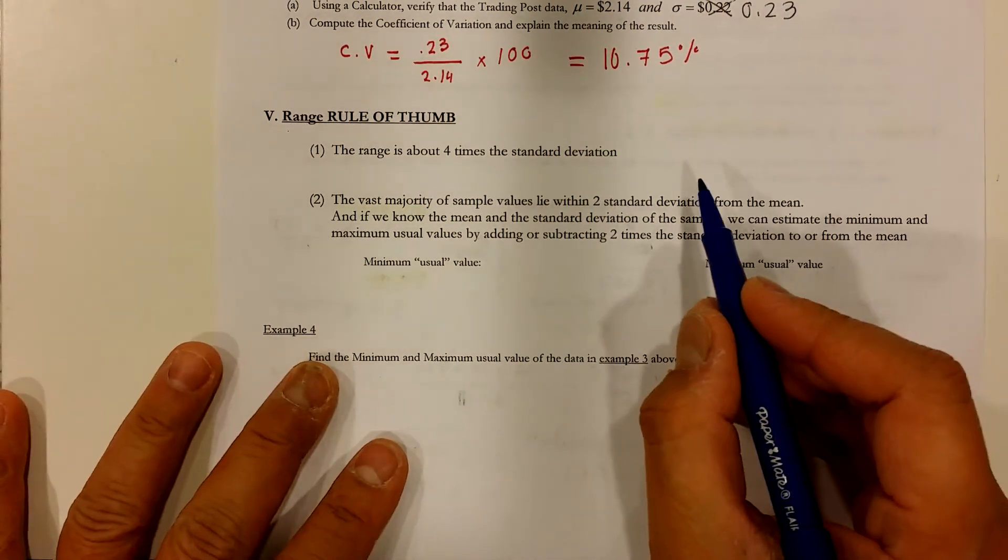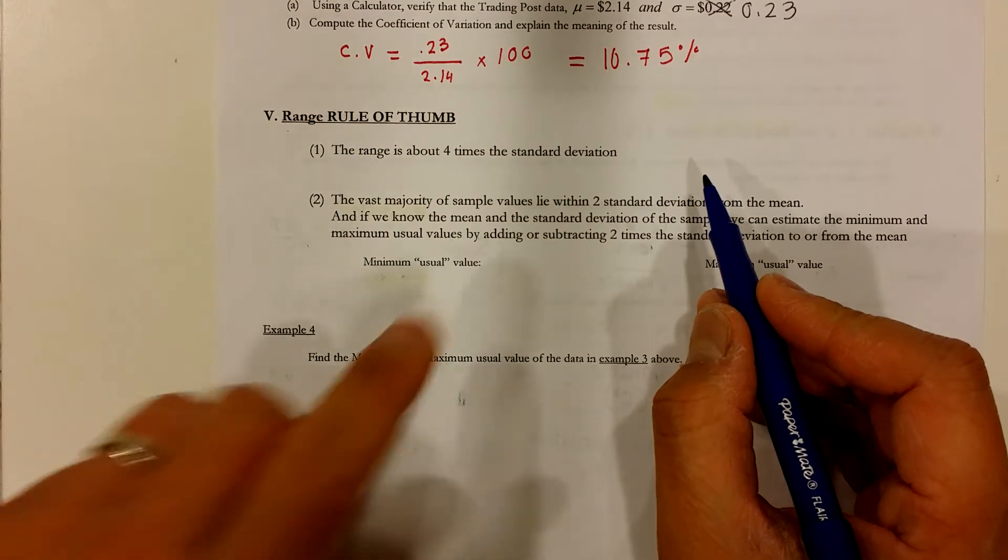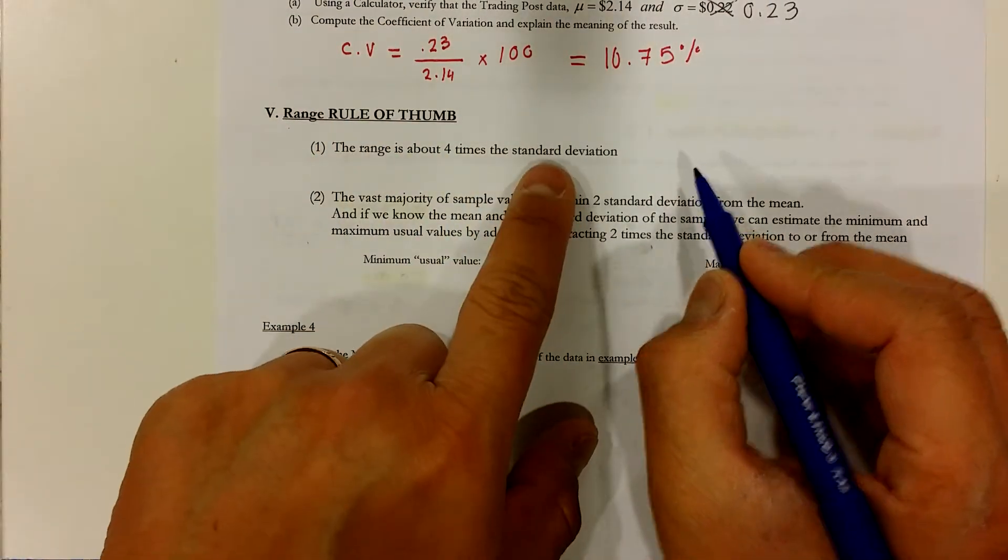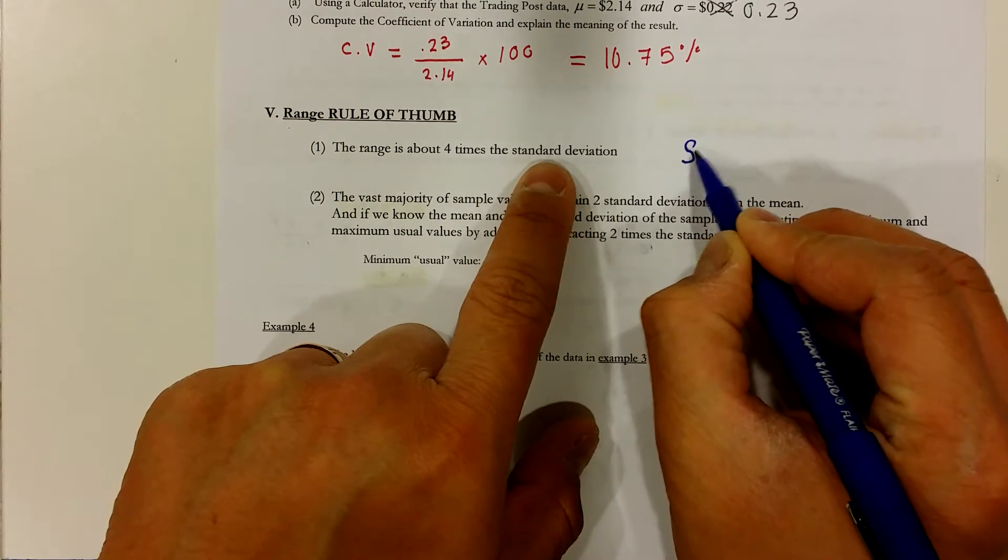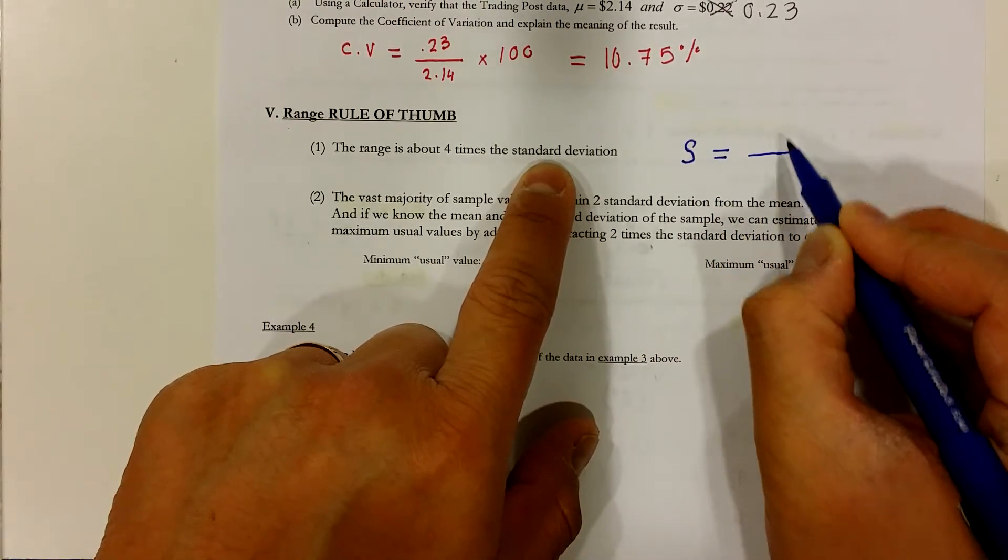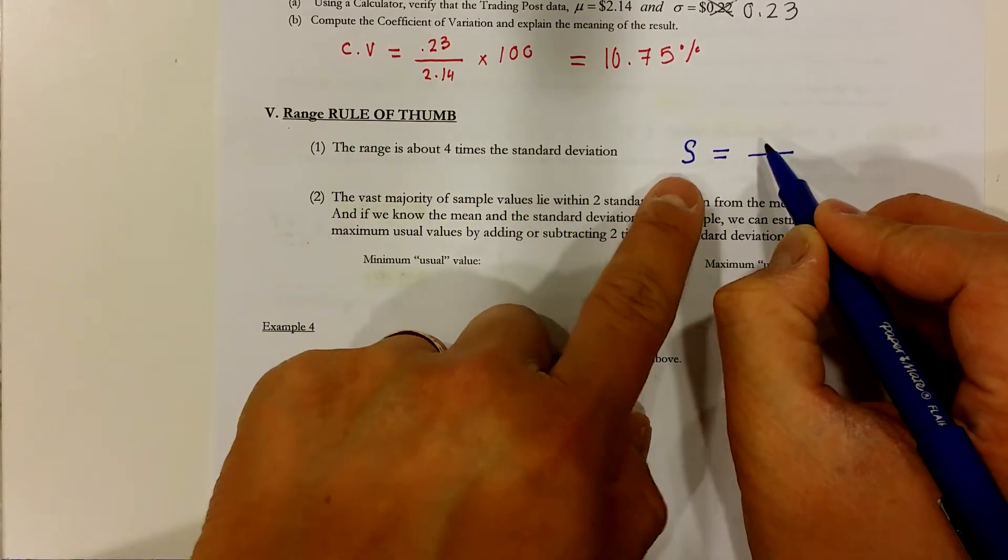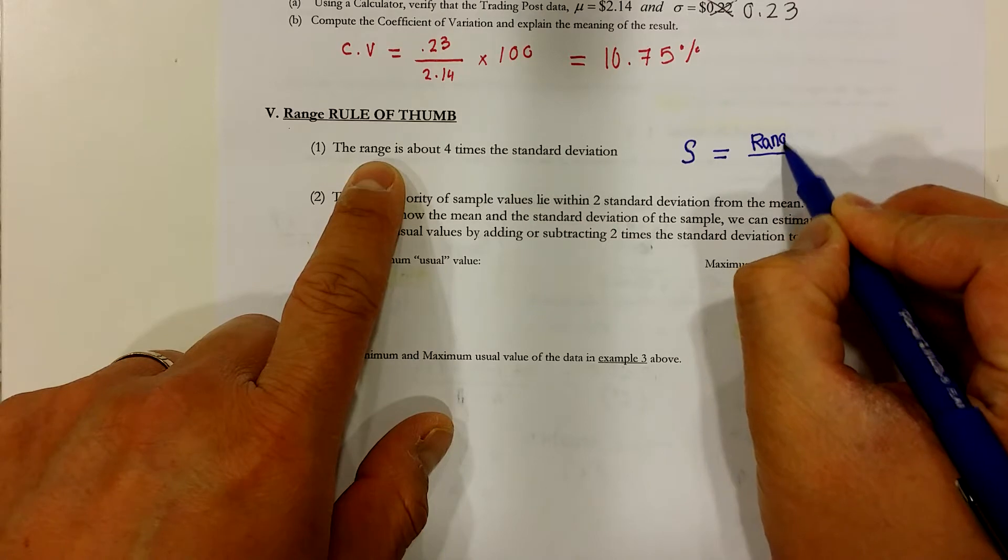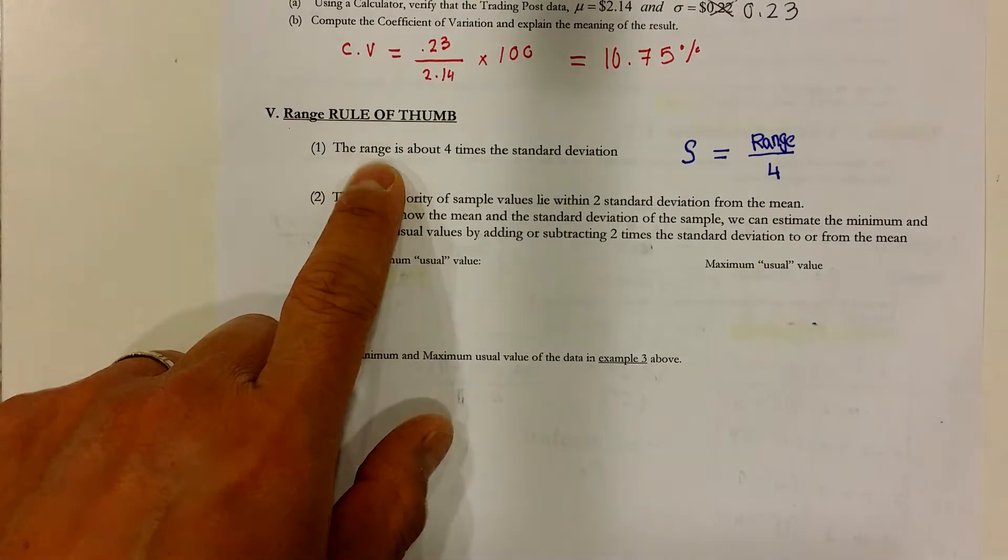Let me repeat that. If you need to quickly approximate the standard deviation, then the rule of thumb tells us that the value of the standard deviation can be found by first finding the value of the range and then dividing that by 4. That's what it's saying.